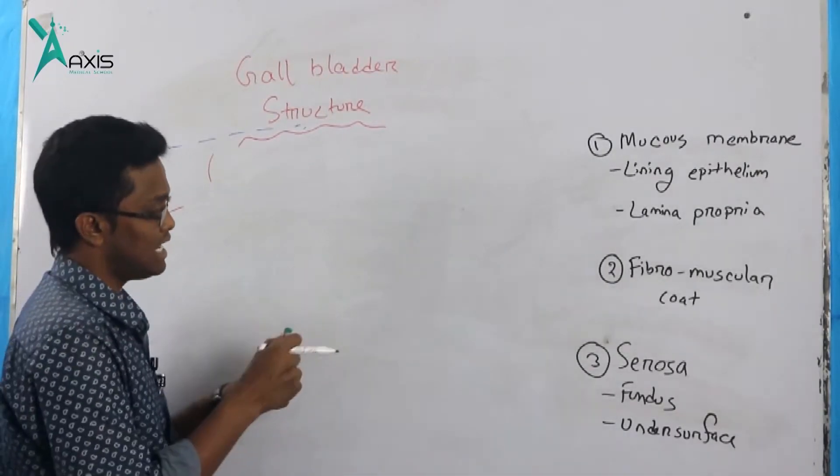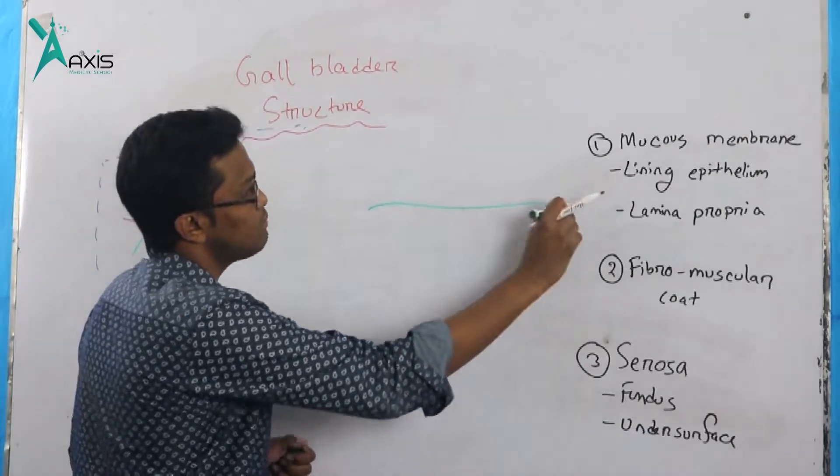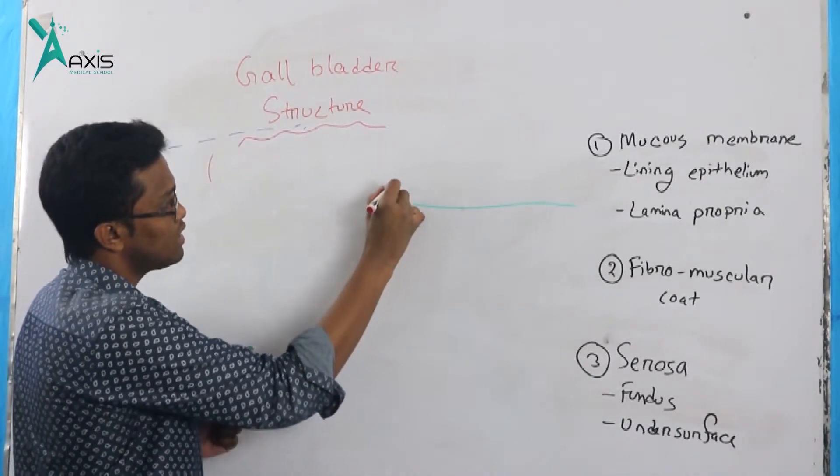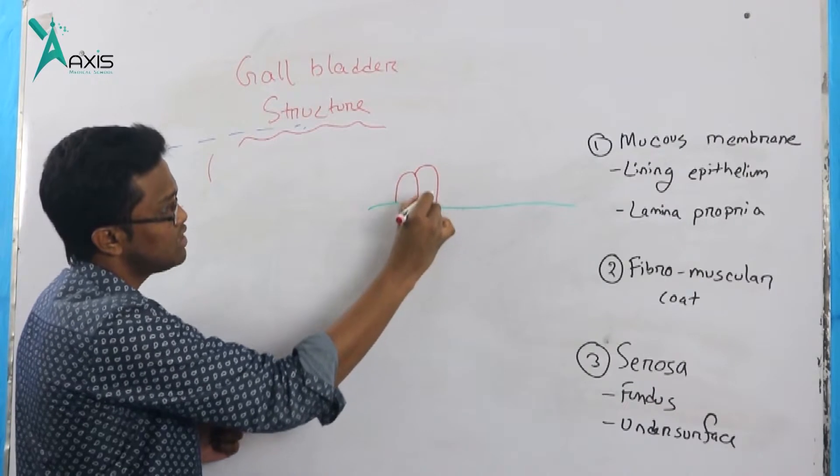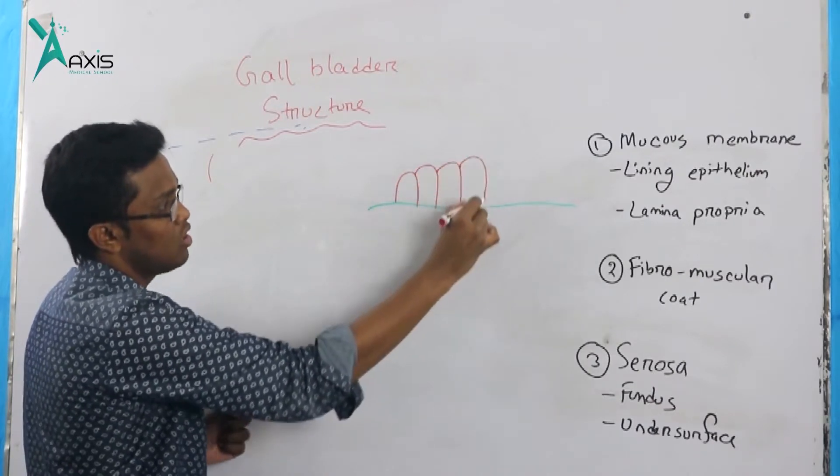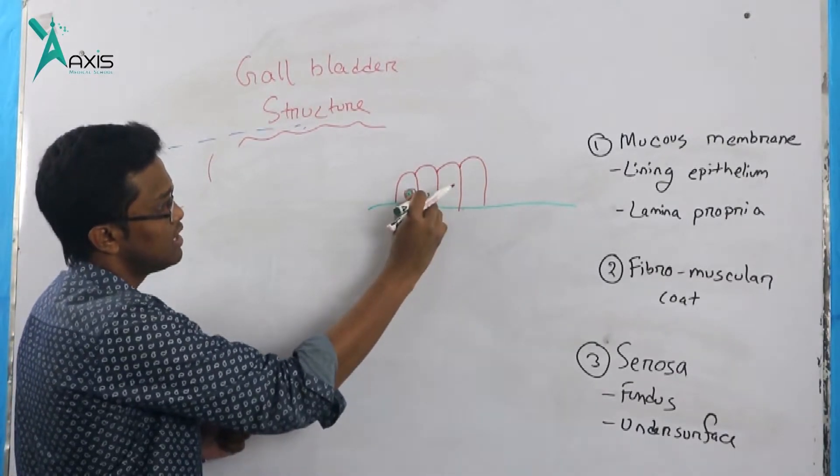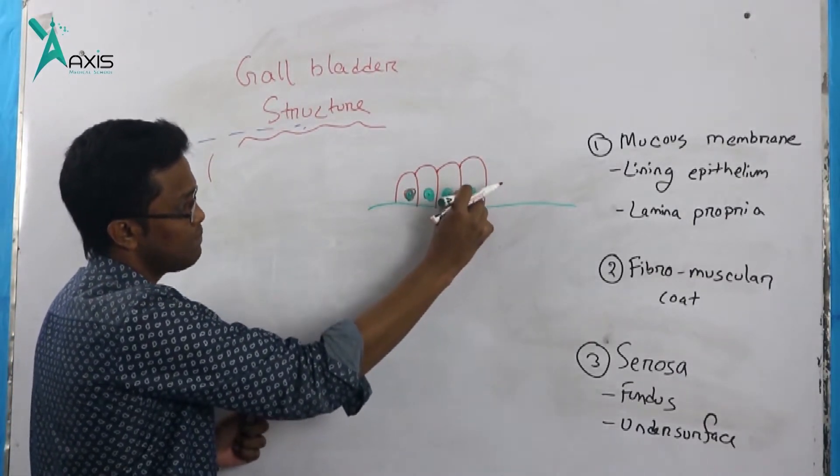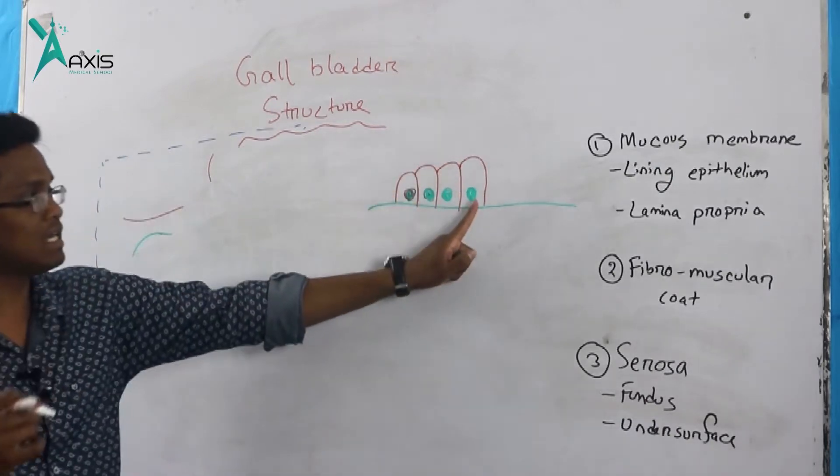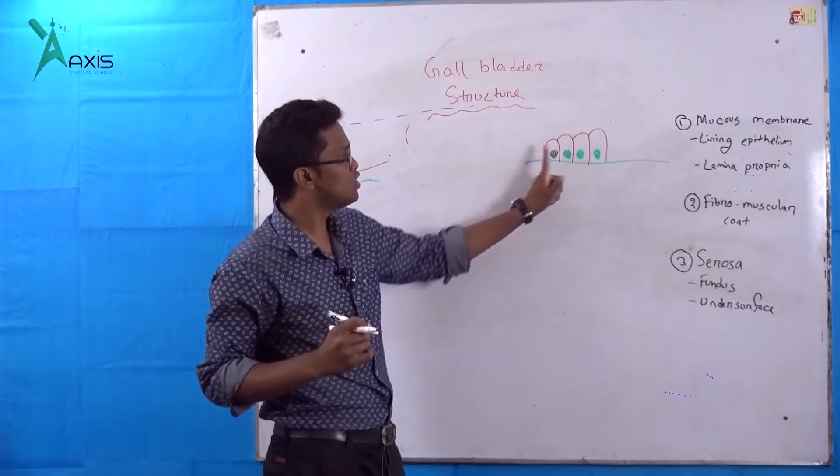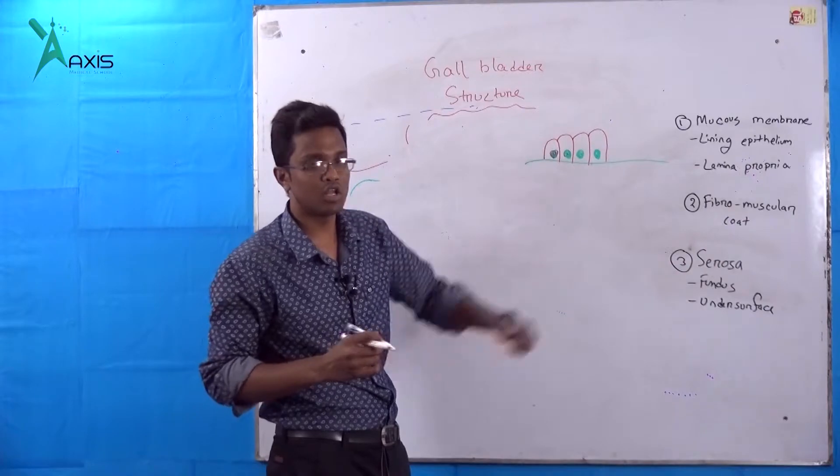One is lining epithelium and lamina propria. There is a basement membrane and above that the lining epithelium, which is simple columnar with oval basal nucleus. The nucleus is located basally and the shape is oval. The nucleus appears blue, and it's a columnar cell.